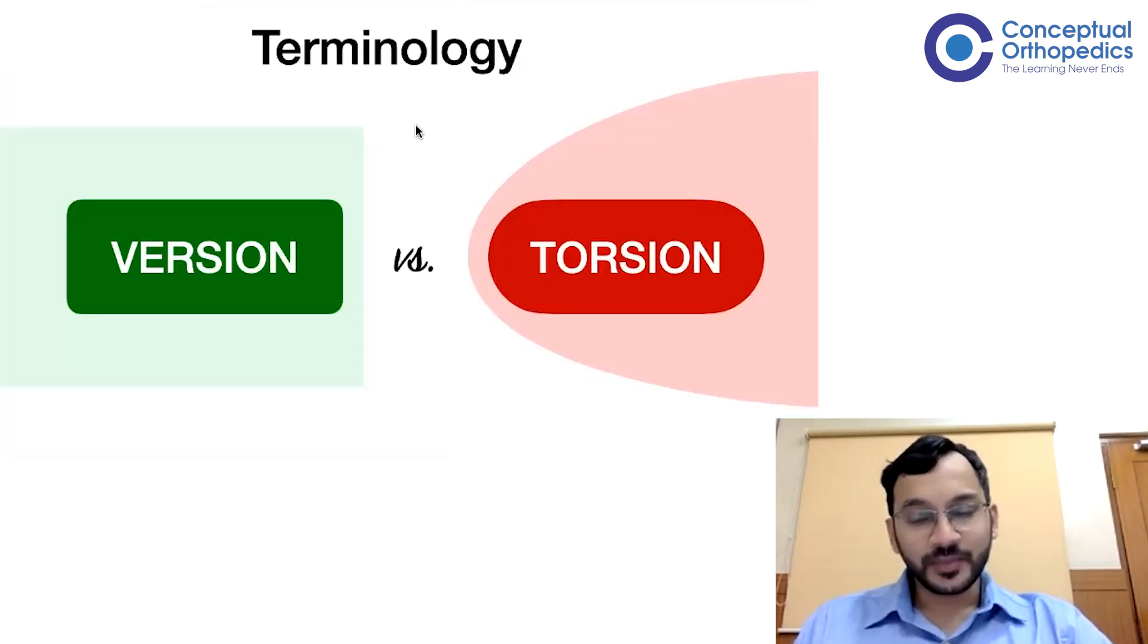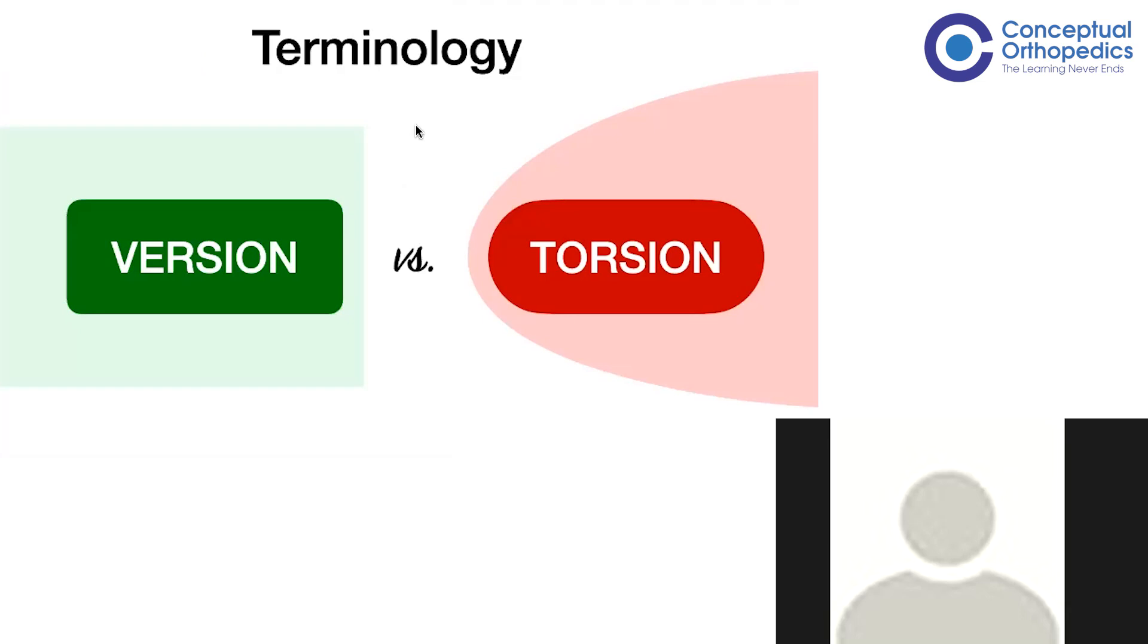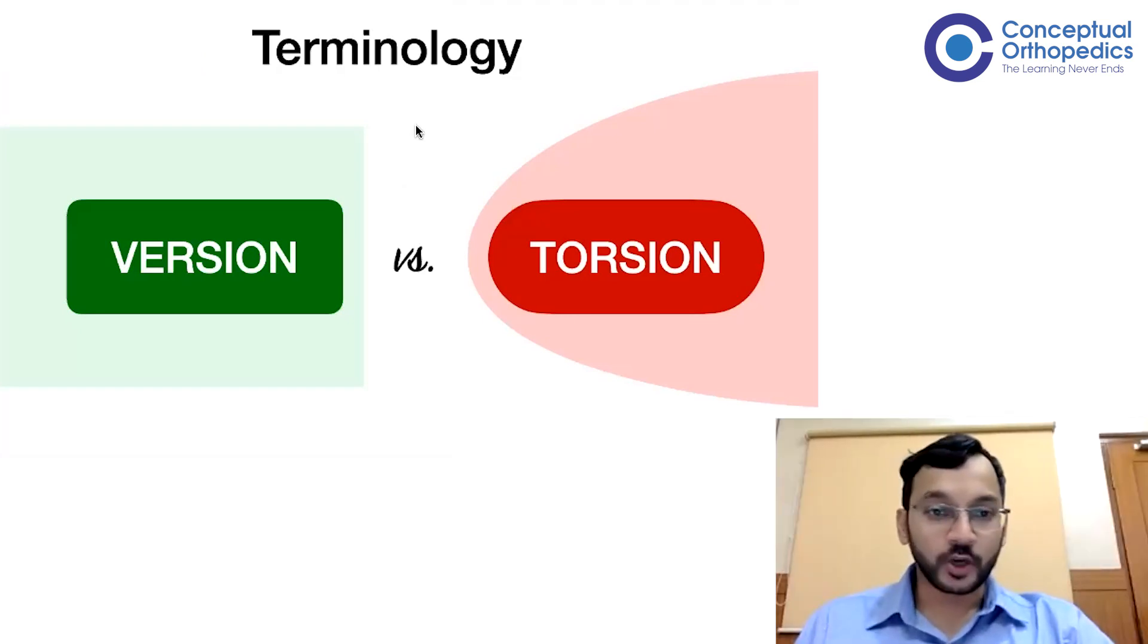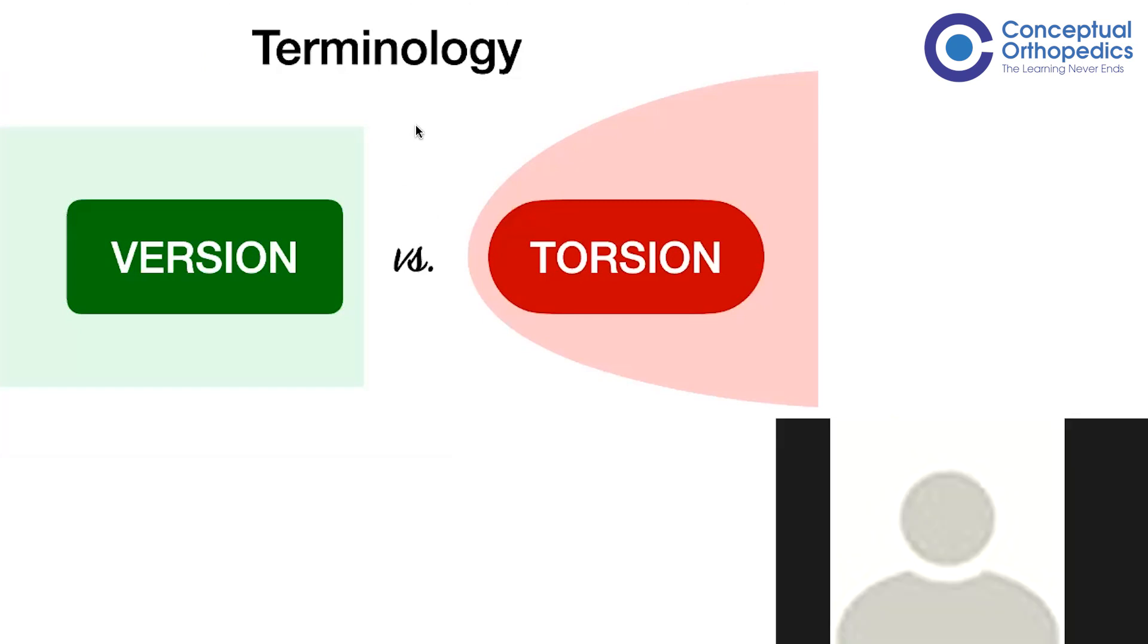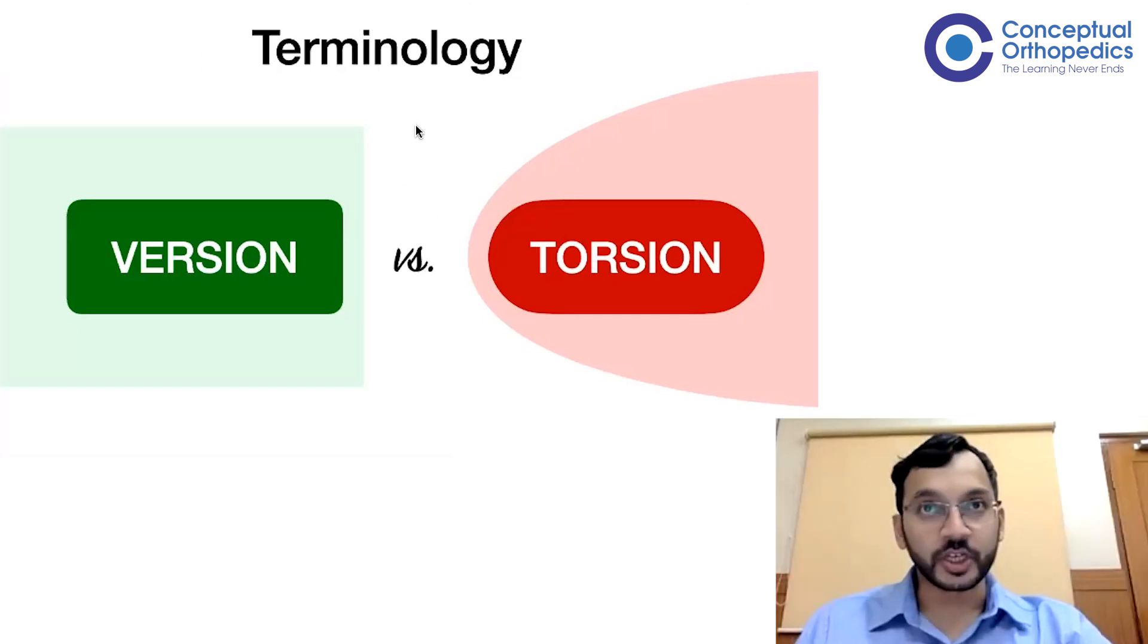Let's clear out some terminology before we start off. We often hear the terms version and torsion and get confused. These terms can be used interchangeably, however the proper terminology for a normal value is a version. Any value which is within two standard deviations of normal becomes a version, whereas anything which becomes a deformity, that is more than two standard deviations away from normal, becomes a deformity and that is often called torsion.